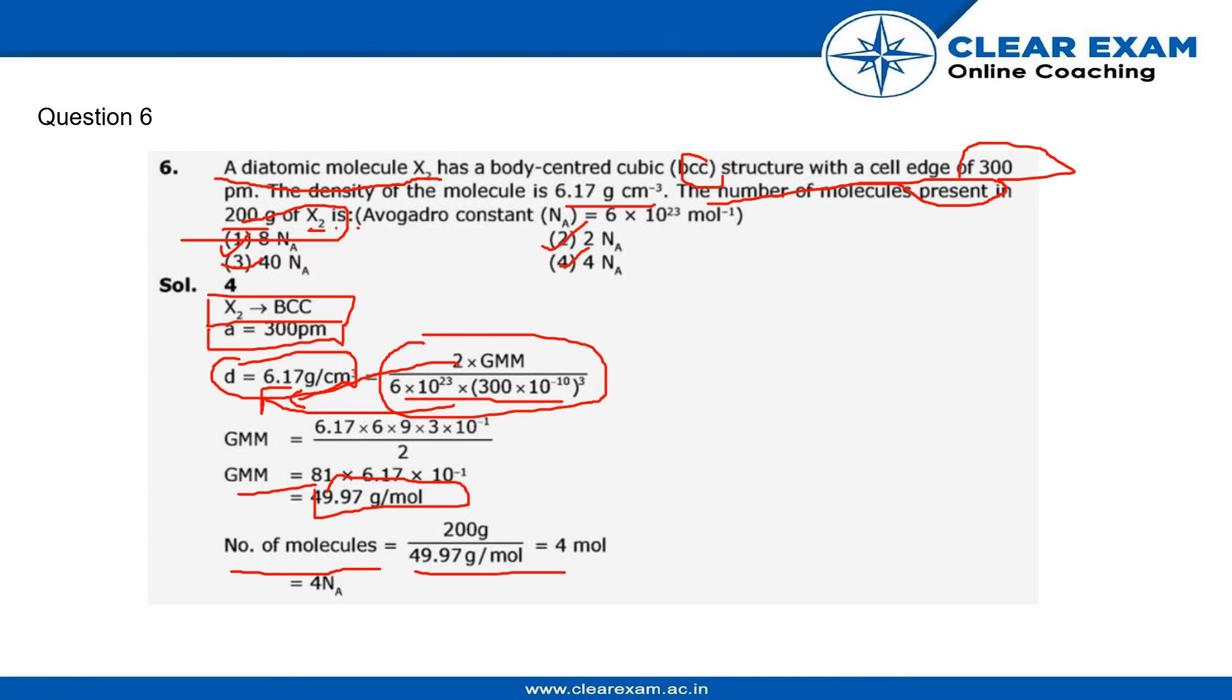So the number of molecules here will be 4 moles, as we divide the GMM by the total grams which we have to find. It comes out to be 4 Avogadro times. Thank you.